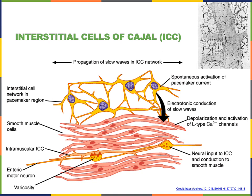Single unit smooth muscle is excited by cells known as interstitial cells of Cajal. The interstitial cells of Cajal perform an autonomous excitation mechanism, meaning that excitation is generated from within the smooth muscle tissue. These interstitial cells of Cajal function as pacemaker or pacesetter cells — they stimulate an action potential that will then spread through the single unit smooth muscle tissue.